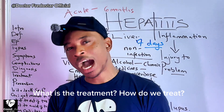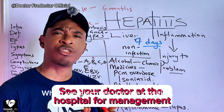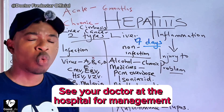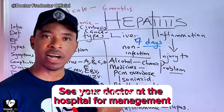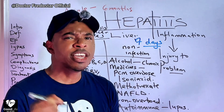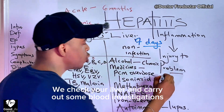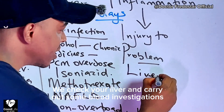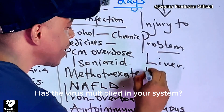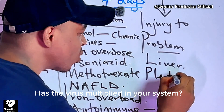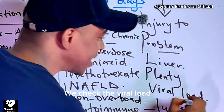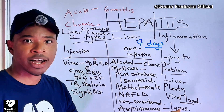When we test you and confirm you are positive, we go further — we check whether hepatitis has spoiled your liver or is causing problems. We will do some blood tests, and we will check if the hepatitis is multiplying inside your system by checking the viral load. This is specifically for hepatitis B.